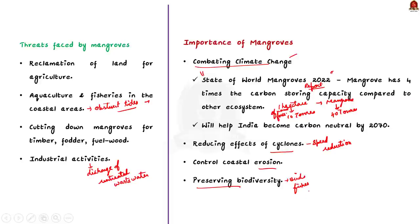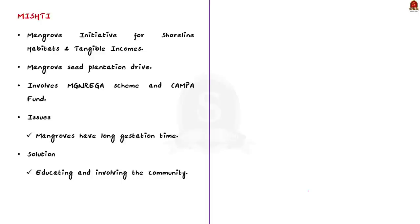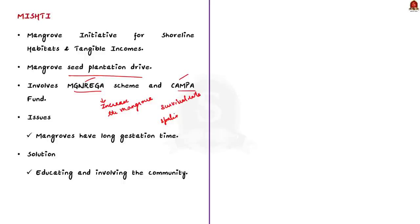Under the MISTHI program, mangrove plantations will be taken up in coastal areas and in salt pans through a convergence between the MGNREGA scheme and the CAMPA fund. However, the issue with MISTHI is that it is just a plantation drive. The survival rate of mangrove seed plantation is 50% and saplings about 60%, with three years needed for a new plant to stabilize. A contract-based one-time plantation may not work without attention. The government must educate local communities about mangrove importance to encourage them to take ownership of local mangrove forests.